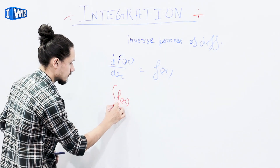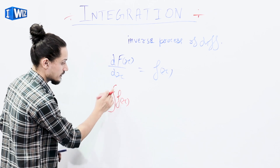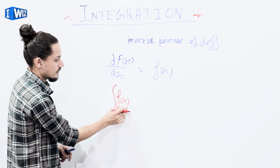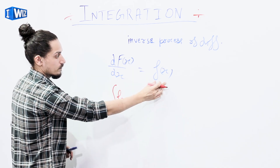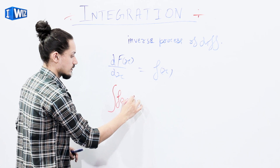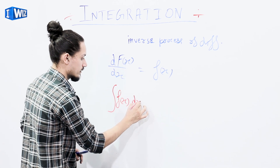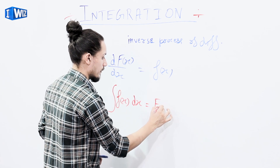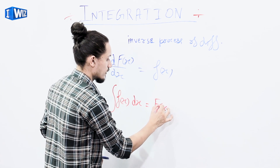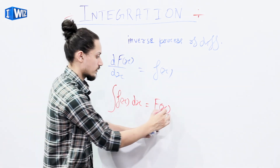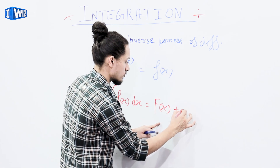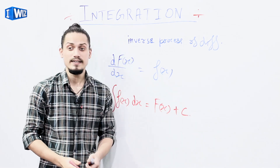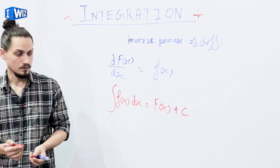We integrate it — this is how you represent integration with this symbol. We integrate the derivative f of x dx and we get the original function capital F of x, but we also get a constant of integration. This C is called the constant of integration.